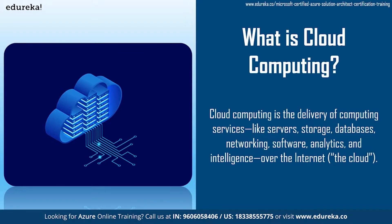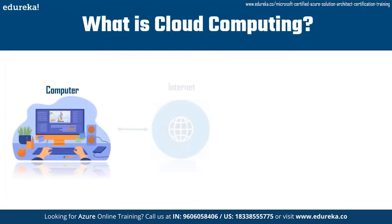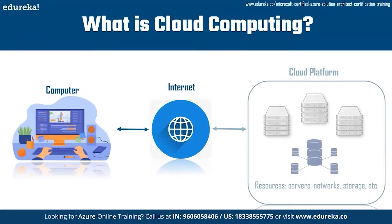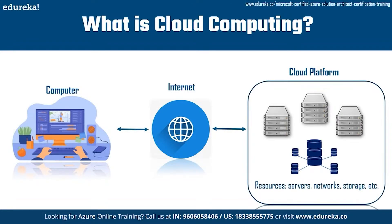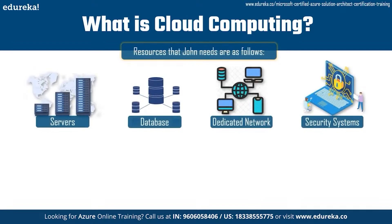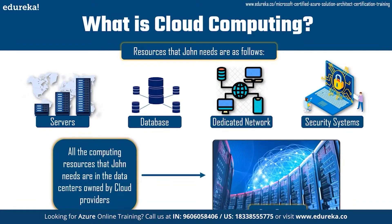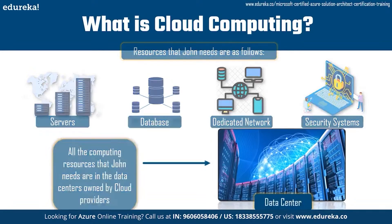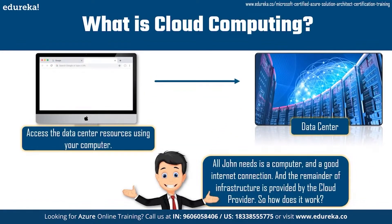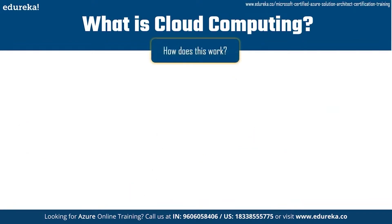So let's understand that. John takes a computer that is connected to the internet, then he accesses the resources on a cloud platform. These resources that John needs are running on physical machines in data centers that are owned by cloud providers. All John needs is a computer connected to the internet, and the remainder of the infrastructure is provided by the cloud provider.